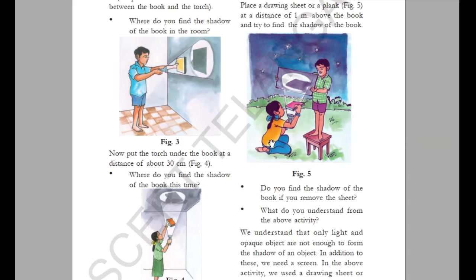So to summarize: first, light is nothing but what is emitted from a luminous source — a luminous object like a candle, tube light, or the sun has its own light. Second, objects are classified into three types based on how light passes through them. Transparent means light passes through, translucent means only some light passes, and opaque means no light passes.